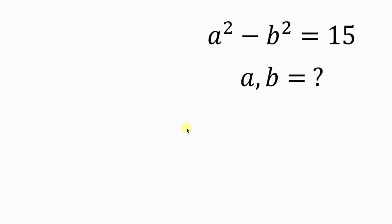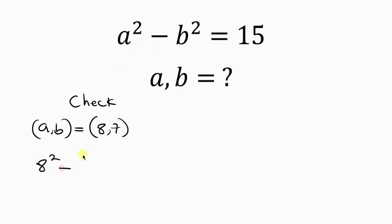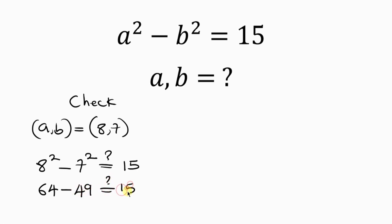Let's check. For our first values A equals 8 and B equals 7: 8 squared minus 7 squared equals 64 minus 49, which equals 15. This matches the right-hand side, so this answer is correct.